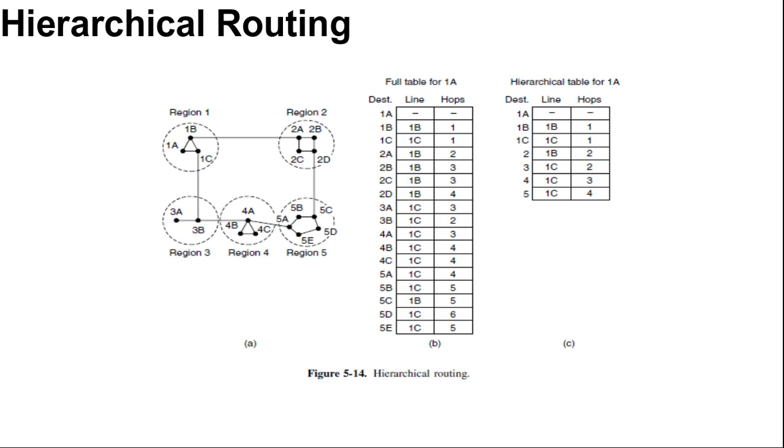Unfortunately, these gains in space are not free. There is a penalty to be paid in increased path length. For example, the best route from 1A to 5C is via region 2, but with hierarchical routing, all traffic to region 5 goes via region 3 because that is better for most destinations in region 5.